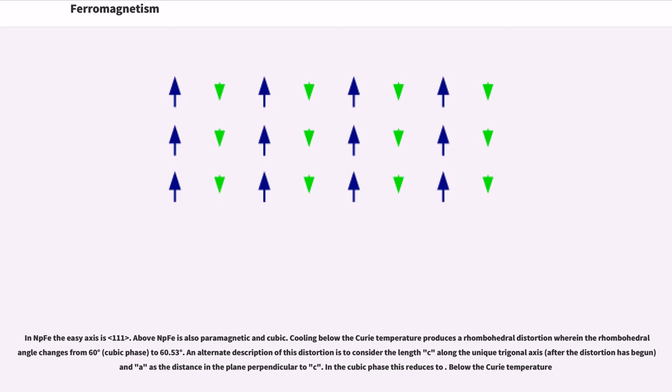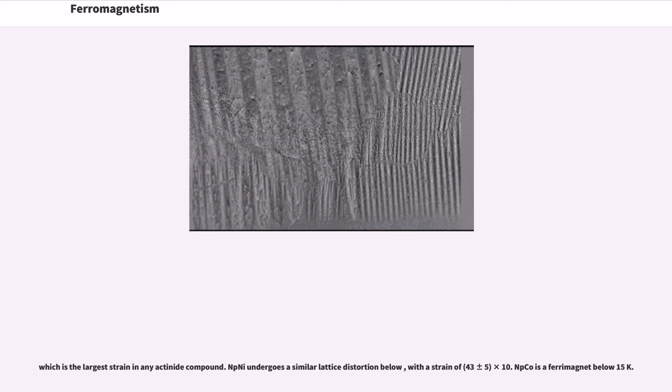In NpFe2, the easy axis is <111>. Above Tc, NpFe2 is also paramagnetic and cubic. Cooling below the Curie temperature produces a rhombohedral distortion wherein the rhombohedral angle changes from 60 degrees, cubic phase, to 60.53 degrees. An alternate description of this distortion is to consider the length C along the unique trigonal axis. After the distortion has begun, A is the distance in the plane perpendicular to C. In the cubic phase this reduces to C/A = √6. Below the Curie temperature, C/A = 1.0162, which is the largest strain in any actinide compound. NpNi2 undergoes a similar lattice distortion below Tc = 32 K, with a strain of (43 ± 5) × 10^-4. NpCo2 is a ferromagnet below 15 K.